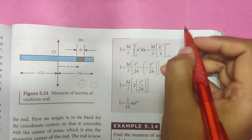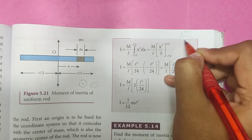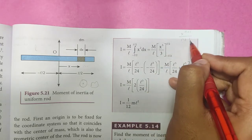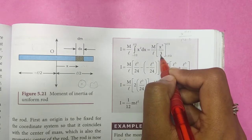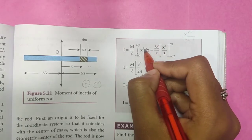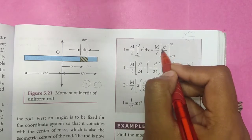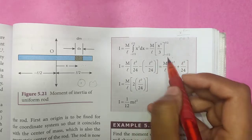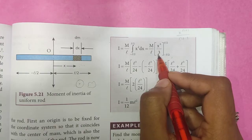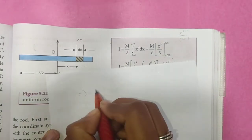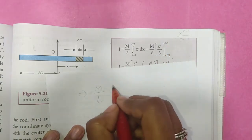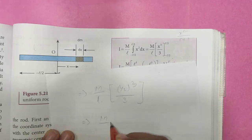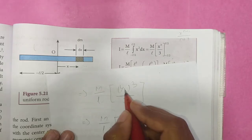Applying the integration formula x^(n+1)/(n+1), with n = 2 we get x³/3. Evaluating with limits from −L/2 to +L/2: upper limit gives (L/2)³/3 = L³/24 (after dividing by 3 and cubing), so the upper limit term is (M/L) · L³/24.